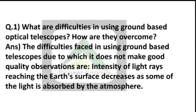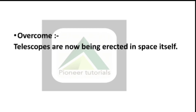Question number 1: What are difficulties in using ground-based optical telescopes? How are they overcome? The difficulties faced in using ground-based telescopes are: the intensity of light rays reaching the Earth's surface decreases, as some of the light is absorbed by the atmosphere. When the telescope is below and the light rays touch the Earth's surface, it starts decreasing because some light is absorbed by the atmosphere. To overcome this, telescopes are now being erected in space itself. We place the telescope in space because most of the light will then be used by it and will not be absorbed by the atmosphere.